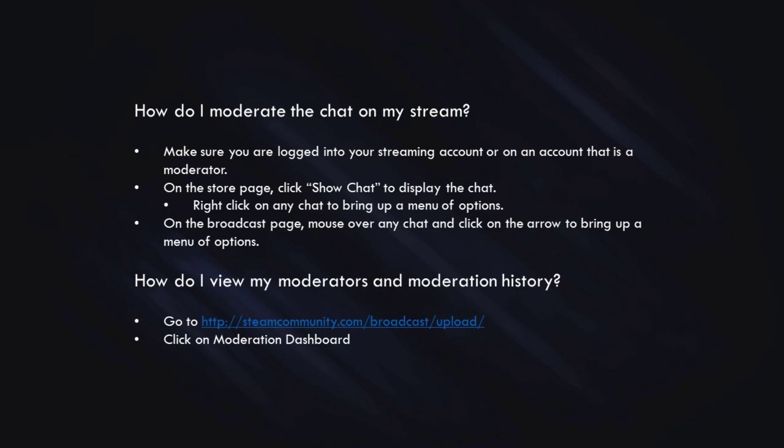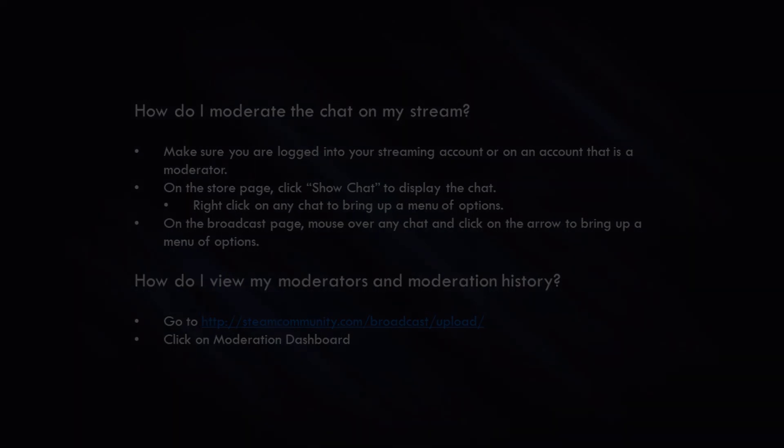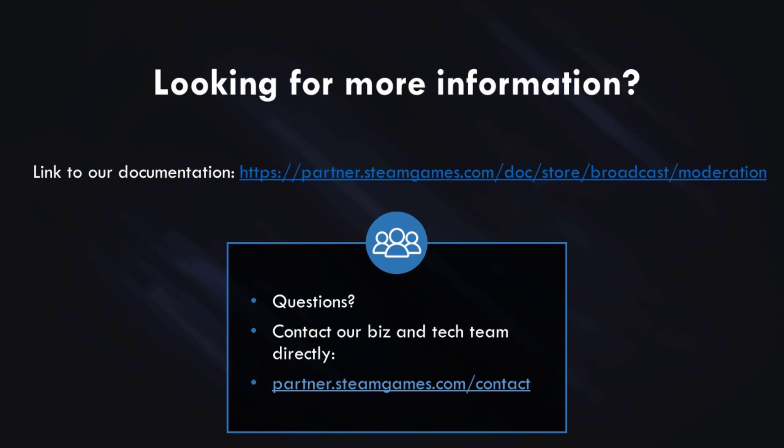How do I view my moderators and moderation history? Go to steamcommunity.com/broadcast/upload and click on the Moderation Dashboard to view a list of your moderators and also users that you've taken action against. If you're looking for more information, here is a link to our documentation on chat moderation. And if you have other questions, you can always contact our biz and tech teams directly using the link below.